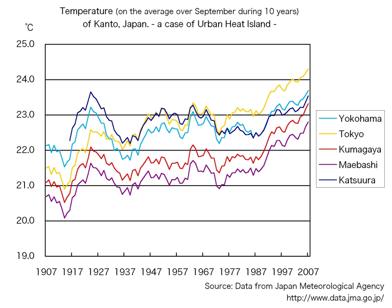Waste heat from automobiles, air conditioning, industry, and other sources also contributes to the UHI. High levels of pollution in urban areas can increase the UHI, as many forms of pollution change the radiative properties of the atmosphere. UHI not only raises urban temperatures but also increases ozone concentrations, because ozone is a greenhouse gas whose formation accelerates with increased temperature. Some cities exhibit a heat island effect largest at night, and seasonally, UHI shows up in both summer and winter.